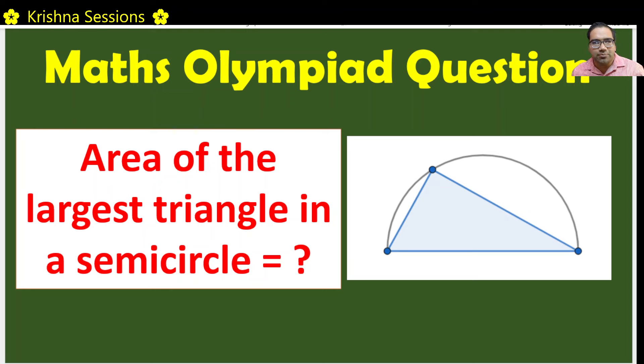This is an easy problem. Let us look at this diagram. Here is a semicircle, and a triangle within the semicircle. Now if you look at this triangle, we want to fit a triangle which has got the maximum area in the semicircle.